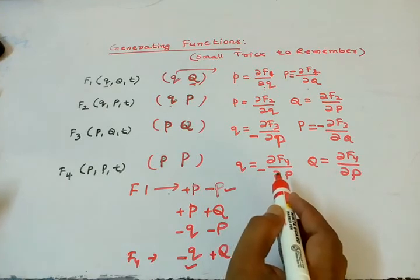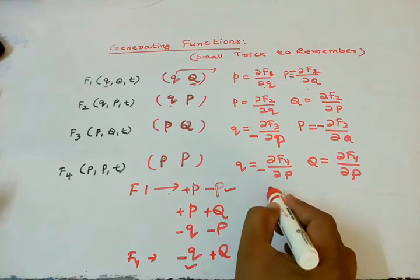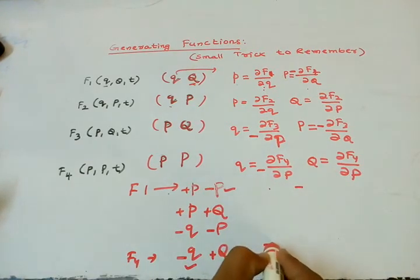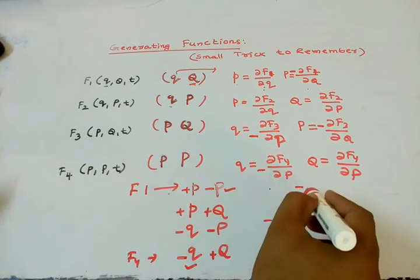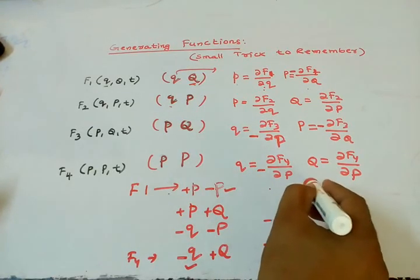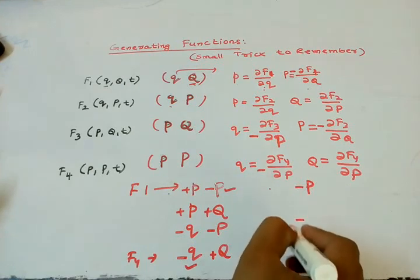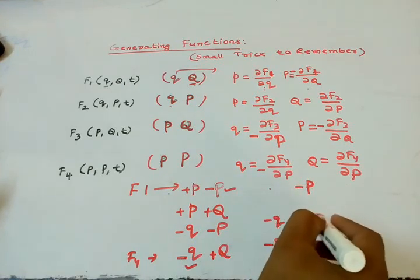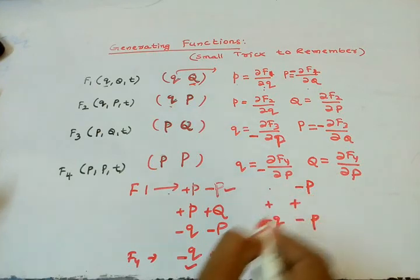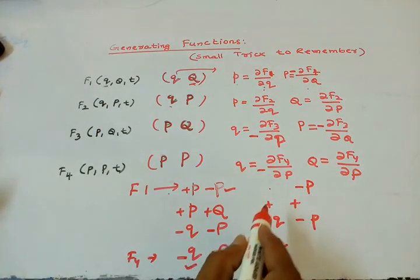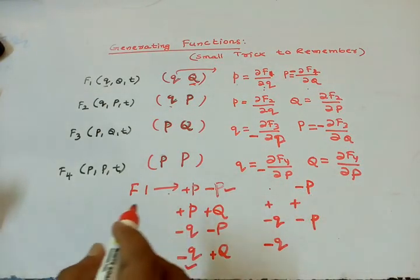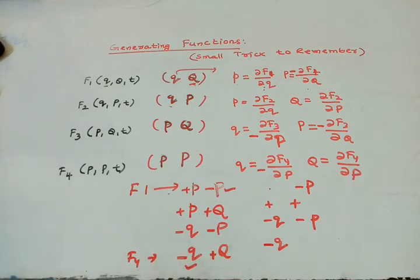The small tip to remember: start with F1 which is negative, then go to F4 which is negative, then F3 which is also both negative, and F2 which is both positive. If you remember this one tip from the video, you can use it when preparing and writing the equations for generating functions.